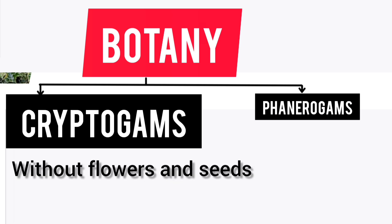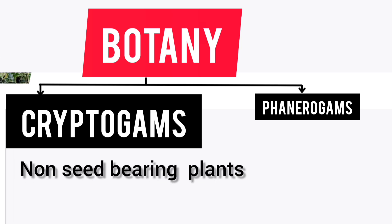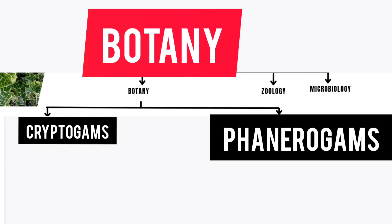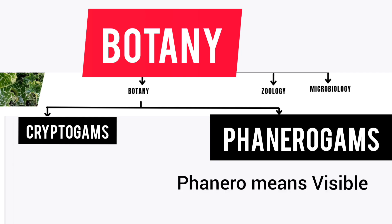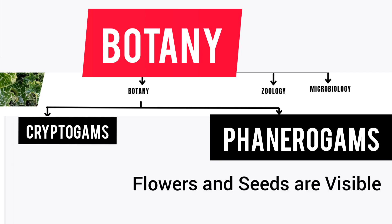A cryptogam is a plant that reproduces by spores, without flowers or seeds — also called non-seed bearing plants. The second group is phanerogams. 'Phanero' means visible — in this group the parts of the reproductive organs, that is flowers and seeds, are visible.